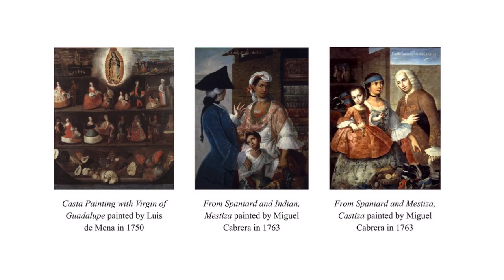By the 1760s, the Spanish had been in control of present-day Mexico for over 200 years. The colony of New Spain became a blend of indigenous people and Spaniards. In addition, Africans were brought to the new world as slaves, and more and more crossings of bloodlines occurred among the Spaniards, Amerindians, and Black Africans, which the Spanish considered to be the three original races.